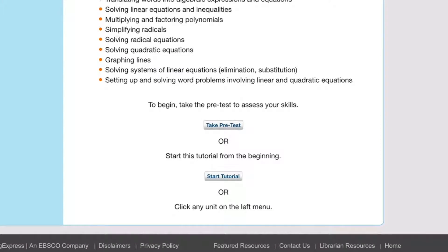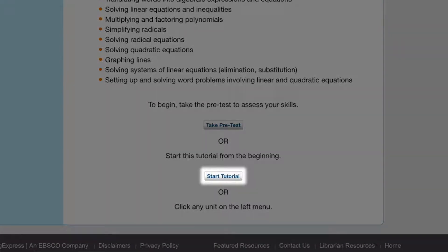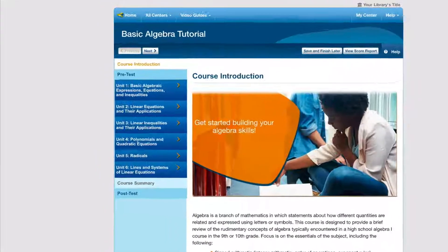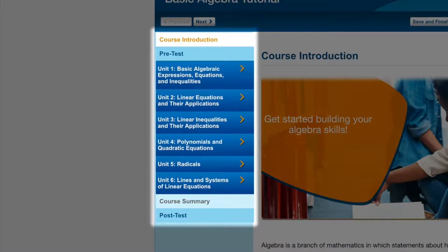But if you want to skip the pretest and just dive into the tutorial, you have two options. You can click the Start Tutorial button to start from the beginning and move from page to page using the Next and Previous buttons. Or you can use the tutorial's outline to browse and jump to a specific unit or lesson.